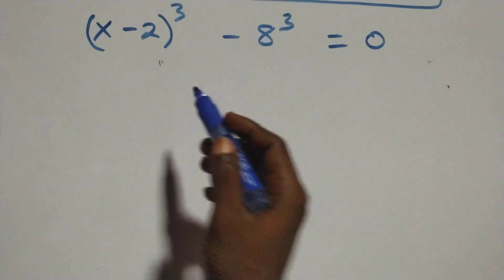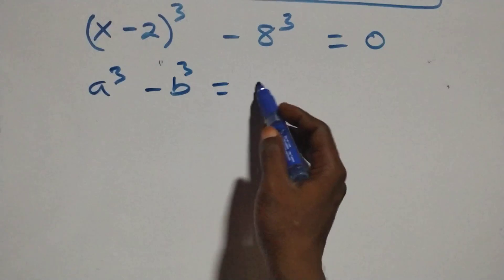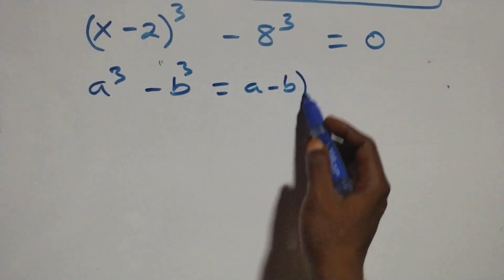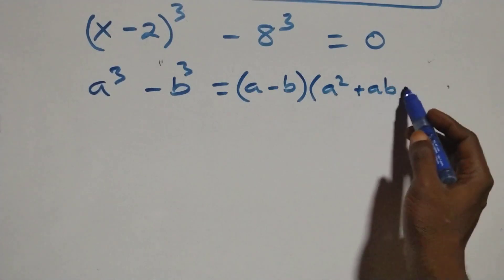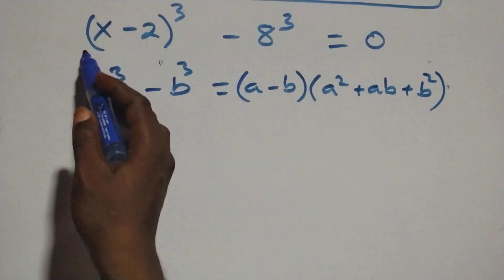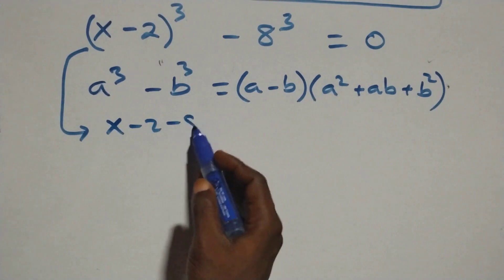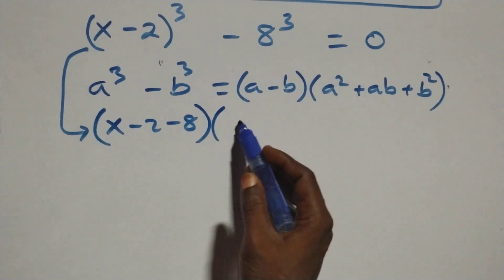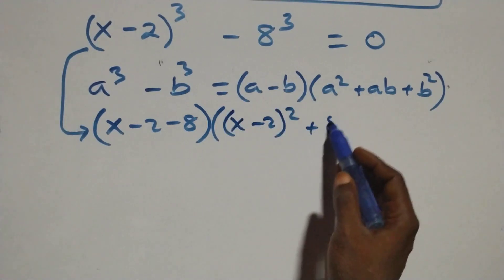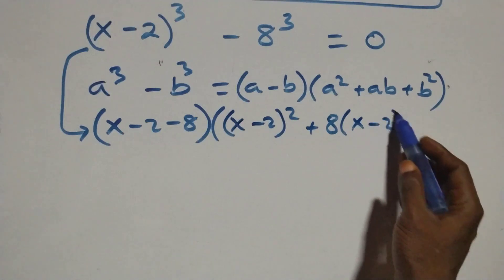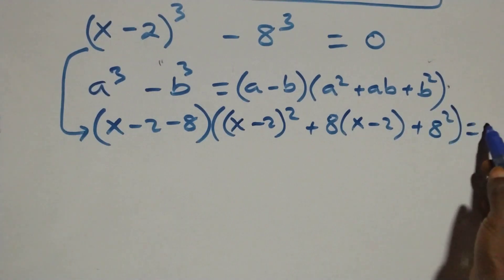For the second case, this follows from a³ − b³ = (a − b)(a² + ab + b²). Applying that: (x − 2 − 8) times [(x − 2)² + 8(x − 2) + 8²] = 0, which gives (x − 10) times [x² − 4x + 4 + 8x − 16 + 64] = 0.